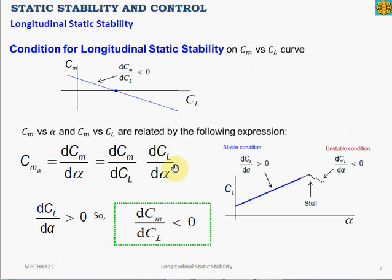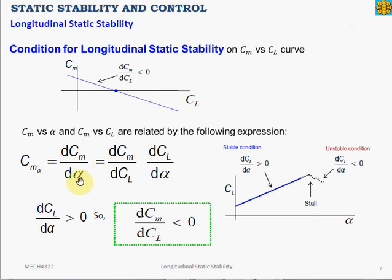DCL/Dα is the lift curve slope. For all aircraft, you must have a positive lift curve slope — when angle of attack increases, lift coefficient increases until stall is reached, after which lift decreases. So DCL/Dα is always positive. Therefore, in order for DCM/Dα to be less than zero, it follows that DCM/DCL must also be less than zero. That is the additional condition for longitudinal static stability.